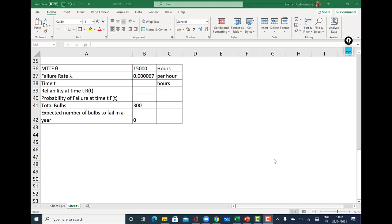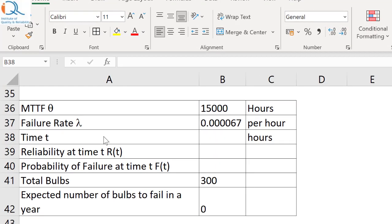What exactly is going to be the reliability at time equal to MTTF? Let us see that. I have made some minor changes in the table that I had created in Excel earlier. Now MTTF theta equals 15,000. Failure rate we have already calculated.